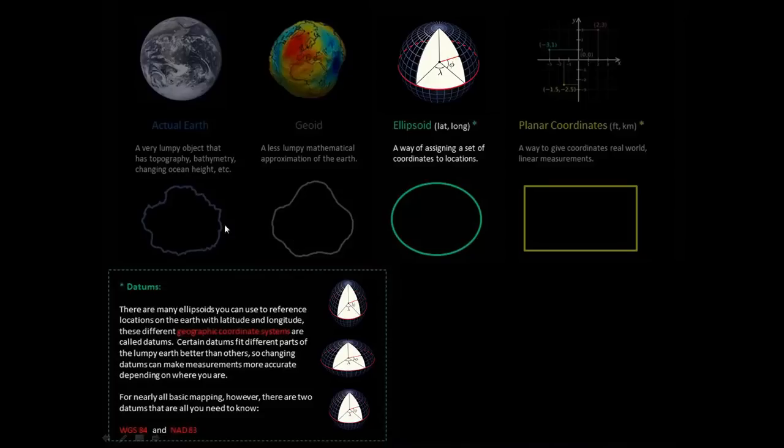So it's important to know about datums and that these are geographic coordinate systems, but we're really only going to use two for this whole course, and those two are WGS84, which if we ever do anything outside of North America we will use, and NAD83.